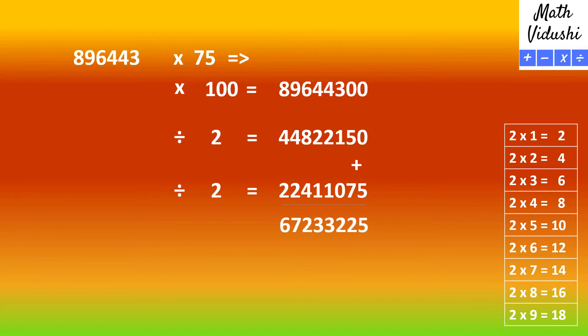You would get the answer as 67,233,225. So 896443 multiplied by 75 is 67,233,225.